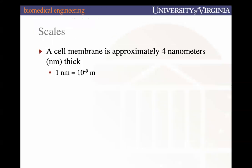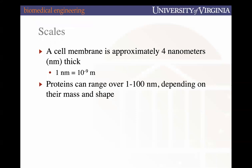It's helpful to get a sense of scale. A cell membrane is approximately 4 nanometers thick — nanometers are 10 to the minus 9 meters. Proteins can range in size from as small as 1 nanometer up to 100 nanometers, depending on their size and shape.